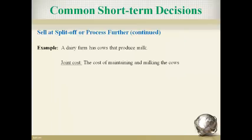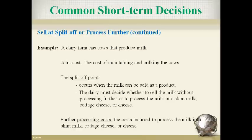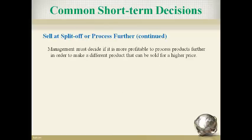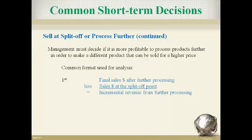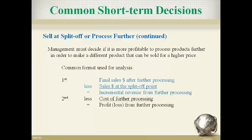For example, a dairy farm produces milk which can be processed further into skim milk, cottage cheese, or cheese. All costs to get the milk are joint processing costs, part of the joint process. The split-off point occurs once the dairy has milk it can sell. The decision to incur costs to further process the milk into different products sold for more is made at the split-off point. The analysis includes only additional revenues compared to additional costs related to further processing. Determine the additional revenue if further processing produces different products, identify the additional cost of further processing, then compare: more added revenues than added costs will lead to more profits.